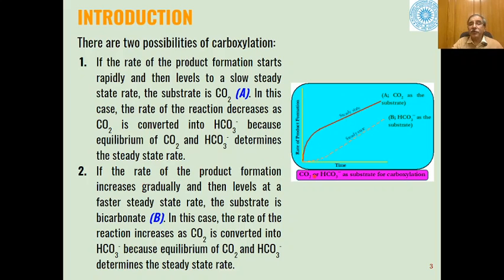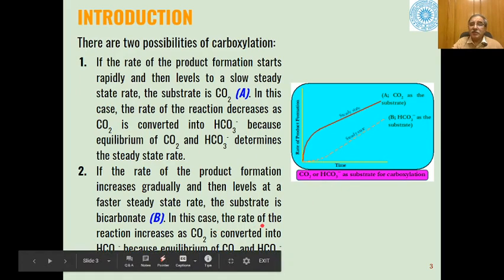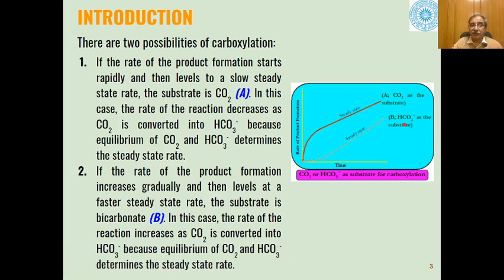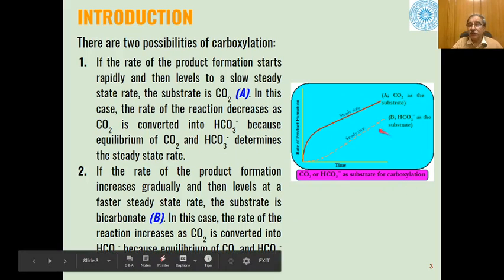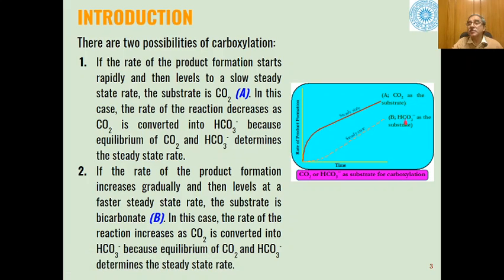If the rate of product formation first increases and then levels at a faster steady-state rate, then the substrate is bicarbonate. In this case, the rate of reaction increases as carbon dioxide is converted into bicarbonate. The equilibrium of carbon dioxide and bicarbonate determines the steady-state during the carboxylation. So on the basis of these two situations, we can differentiate whether carbon dioxide or bicarbonate is being used as a substrate.